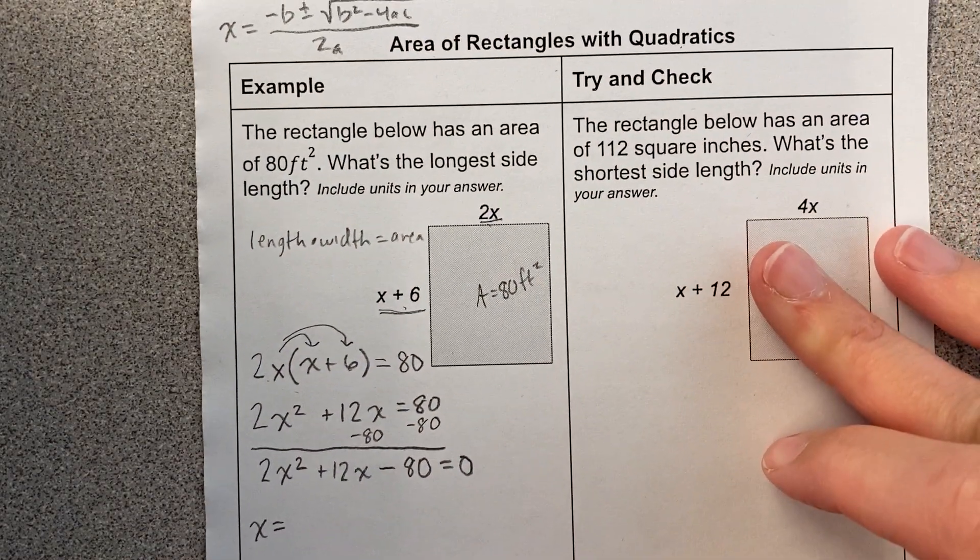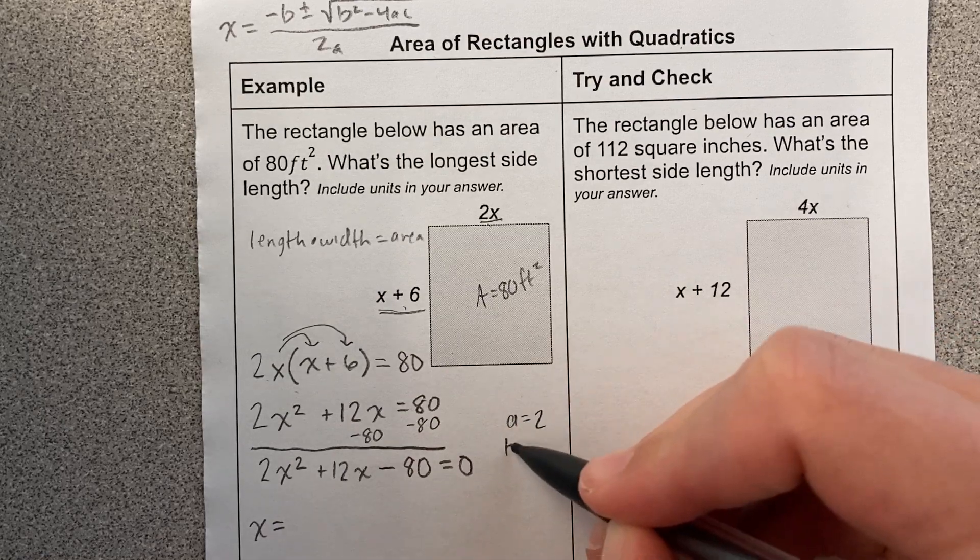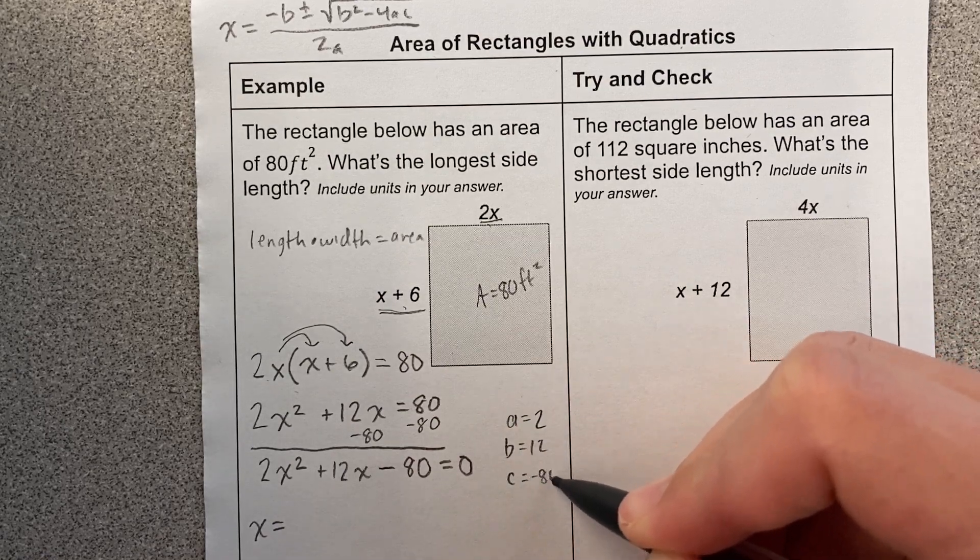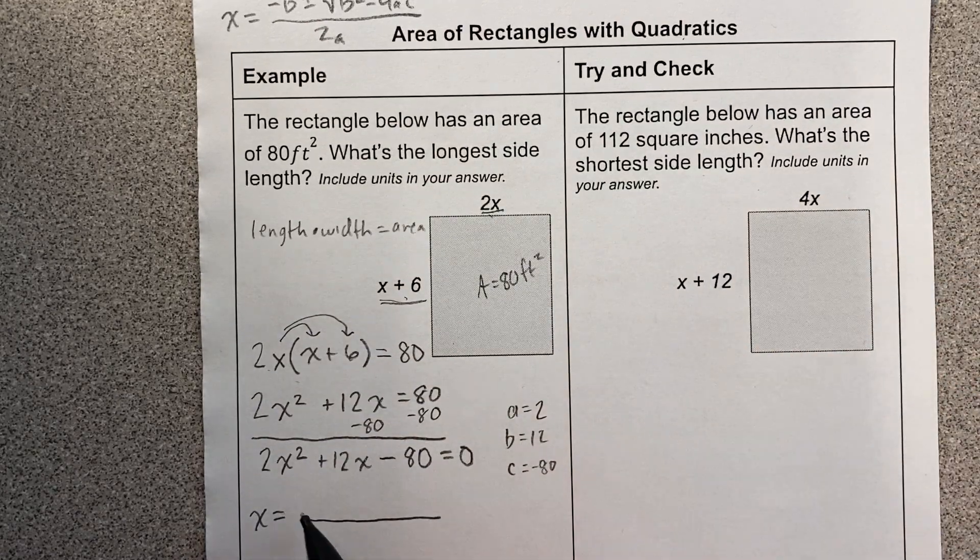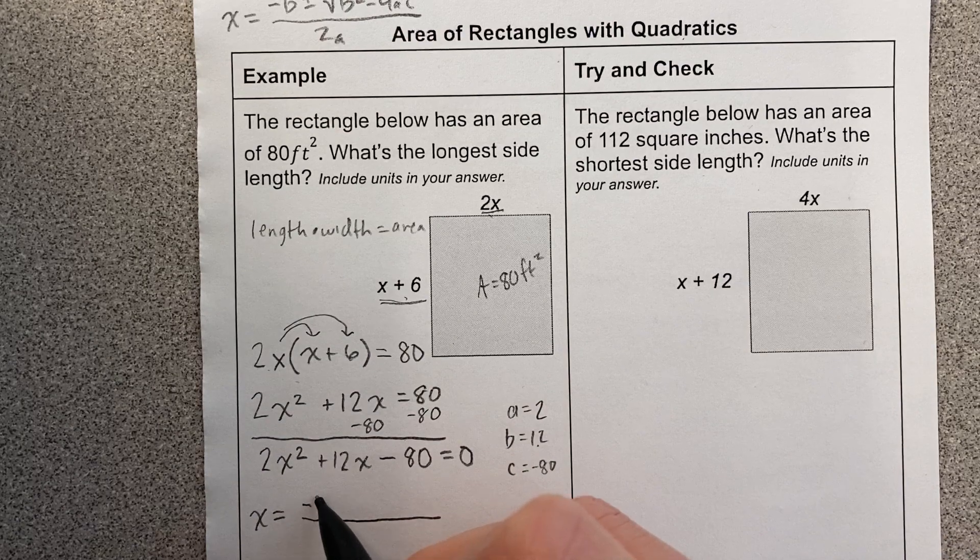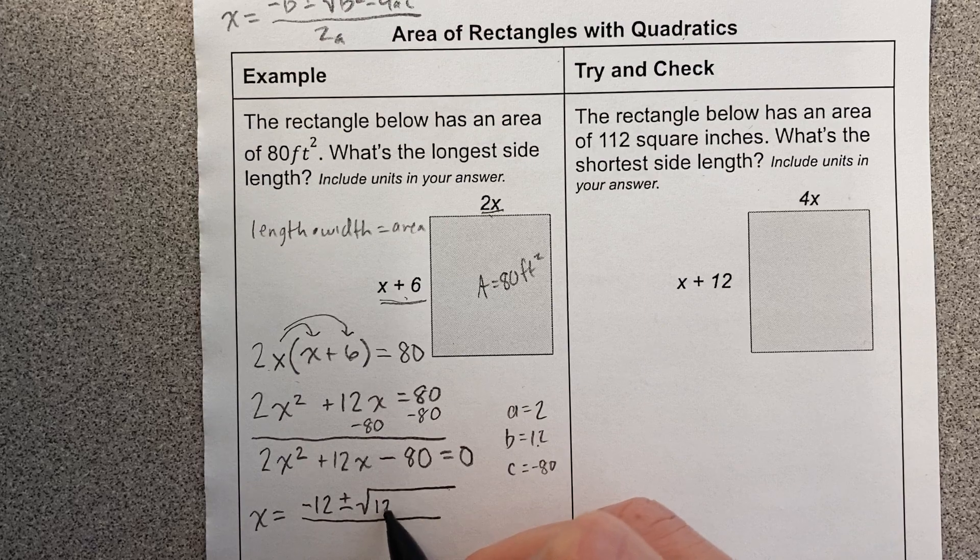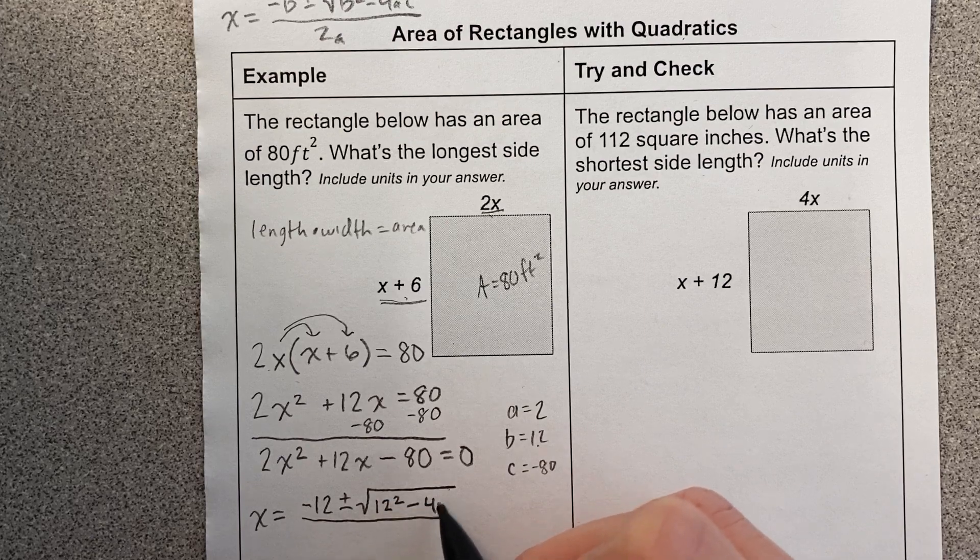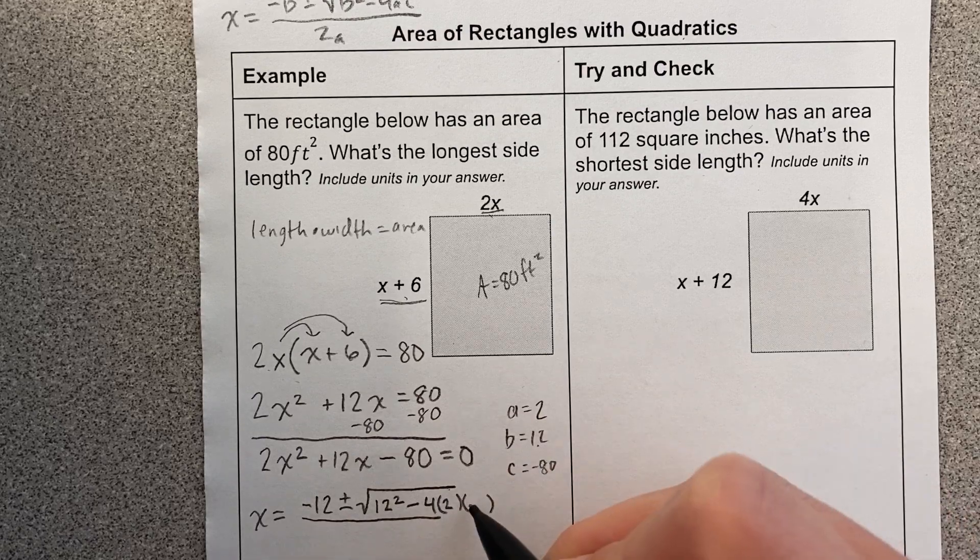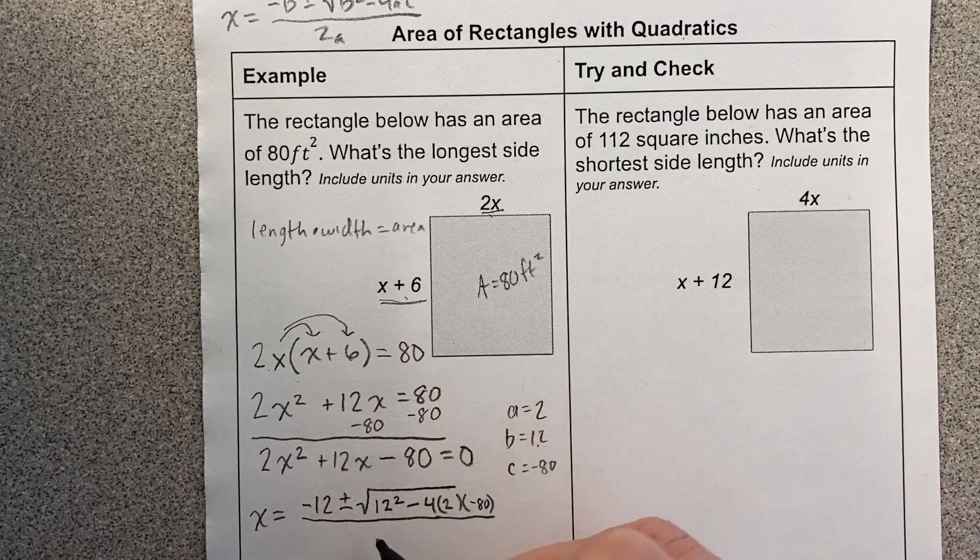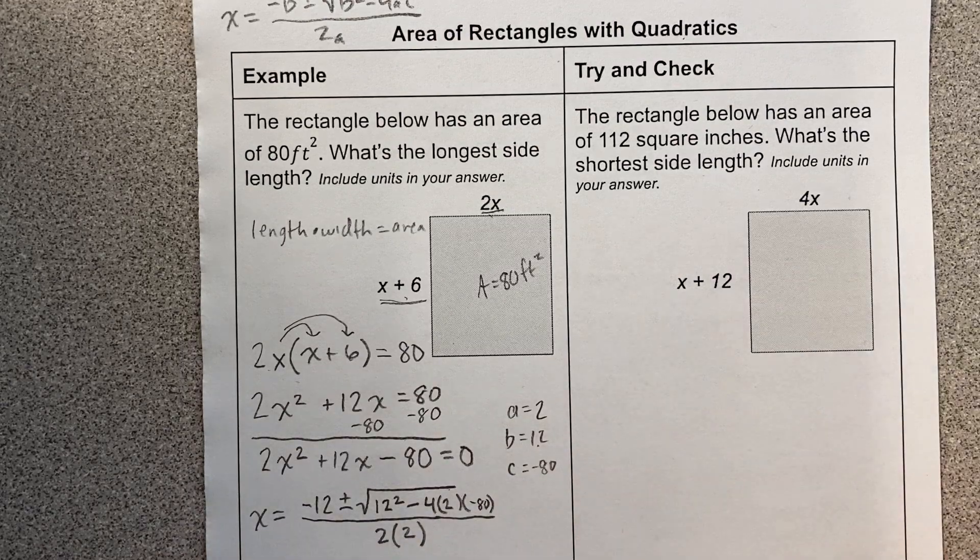All right, let's do it. Okay, here my a is 2, my b is 12, and my c is negative 80, big old number. That's okay, we'll just use our calculator. Okay, opposite of b plus or minus the square root of b² minus 4 times a times c. And my a is 2, and my c is negative 80. And it's all over 2a, so my a is 2. All right, there it is.